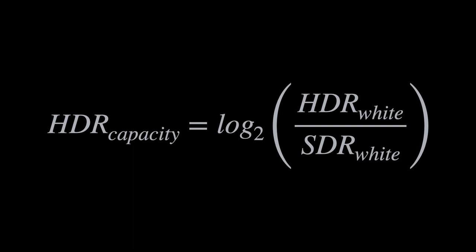As an example, if your SDR white level is 200 nits and your HDR white level is 1,000 nits, then that ratio would be 5 to 1. Take the log base 2 of the result—that's about 2.3. So your display has 2.3 stops of overrange capacity compared to SDR.